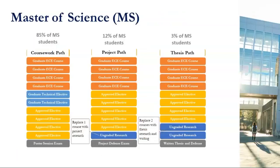For our Master's of Science there are three possible paths. Almost all of our students do the coursework path, which has four graduate ECE courses. Two graduate technical electives — as with the MEng, these can be anything in a technical field — and then four approved electives, which can be whatever is appropriate to your career trajectories.